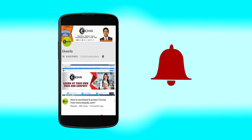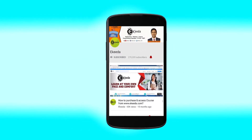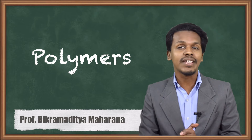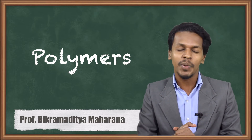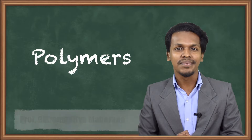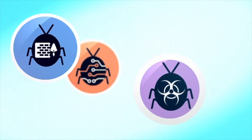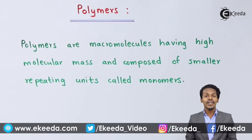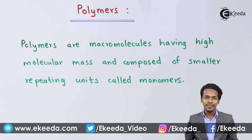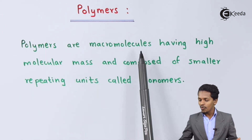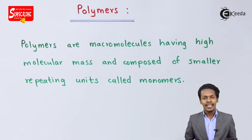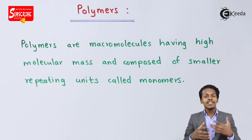Hello friends, now we are going to talk about a new chapter — that is polymers. Let me introduce the definition: polymers are macromolecules having high molecular mass and are composed of smaller repeating units, those are called monomers.